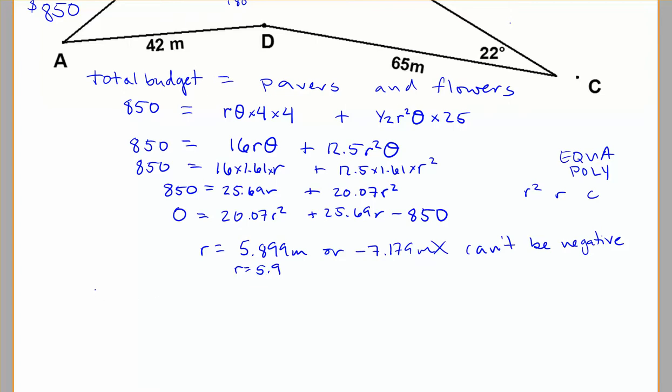But we might just say that 5.9 is kind of close to a whole meter, so maybe if they space their gapping a little bit, it would work. So let's figure out our cost here. For a radius of 5.9 meters, for my arc length, I've got $16 times 1.61 radians times 5.9 meters.